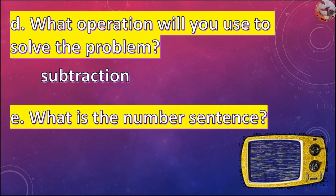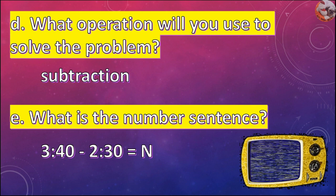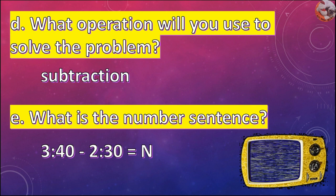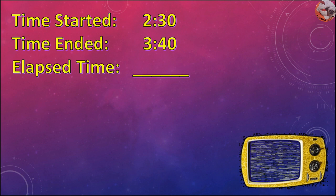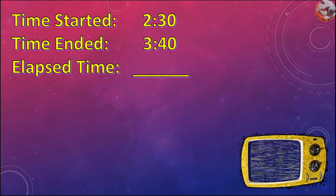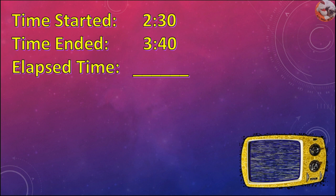So, what is the number sentence? 340 minus 230 is equal to N. The time started is 2:30, time ended is 3:40, so you have to find the elapsed time.